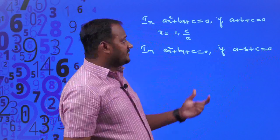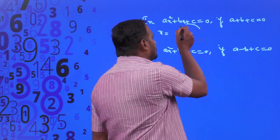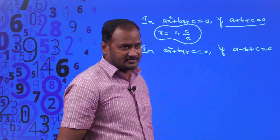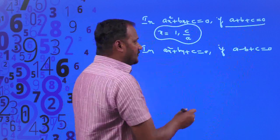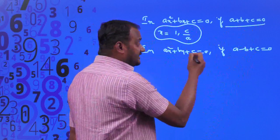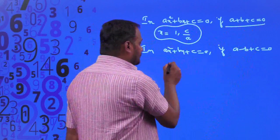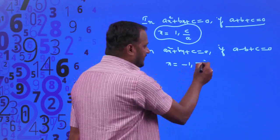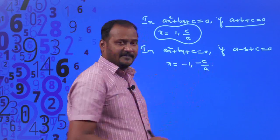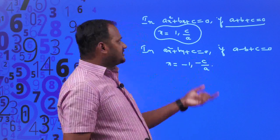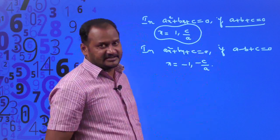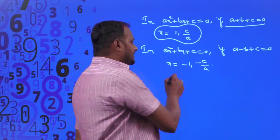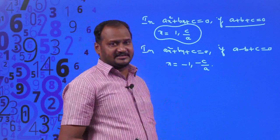In the same way that we found out the roots under A + B + C = 0, we can show and derive that the roots of the quadratic equation are x = -1 and x = -C/A. If you want to prove this like we proved in the previous class, we can do the same thing to get those roots.